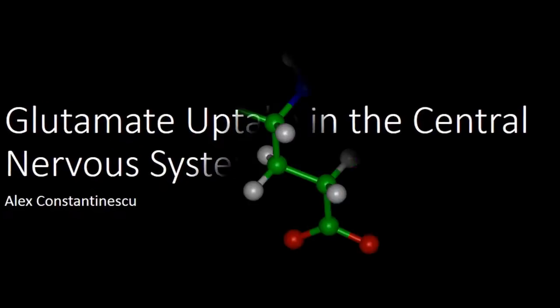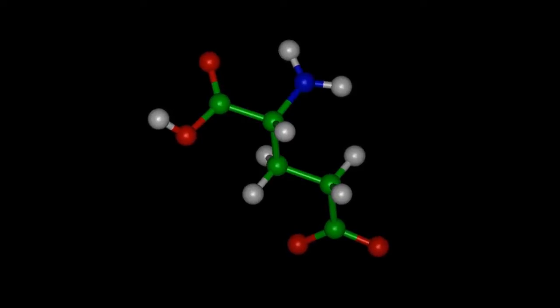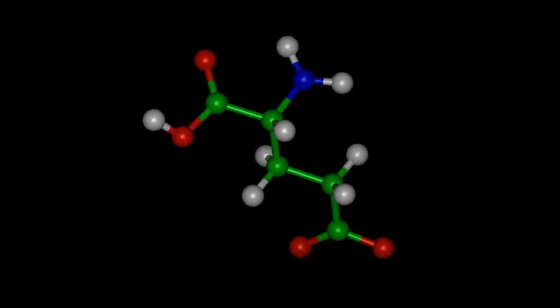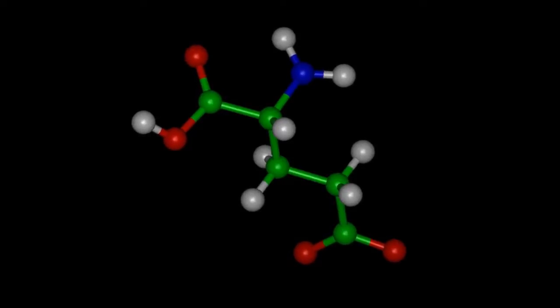So today we're going to talk about astrocytic glutamate uptake in the central nervous system. Glutamate has a variety of functions. For now, we're only going to focus on the role of glutamate in synaptic transmission. In the central nervous system, it is the most prominent excitatory neurotransmitter.